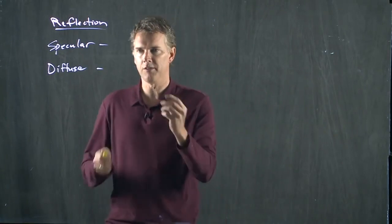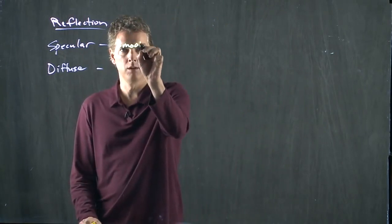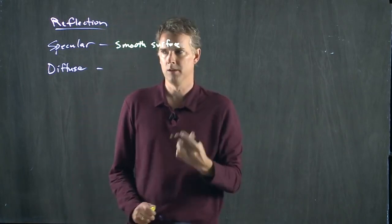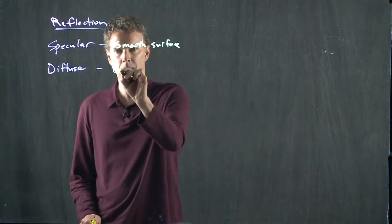So specular is just that. It is a smooth surface. Diffuse is a bumpy surface.